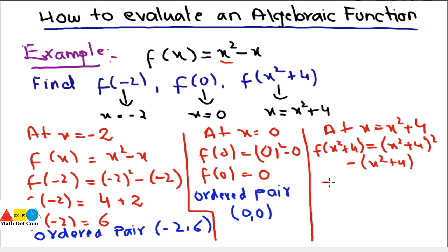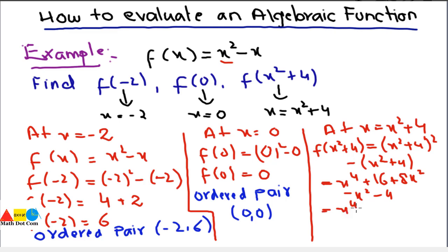Expanding (x² + 4)² using the formula (a + b)² gives x⁴ + 8x² + 16, then subtracting (x² + 4) gives x⁴ + 8x² + 16 - x² - 4. Simplifying: 8x² - x² = 7x², and 16 - 4 = 12. So f(x² + 4) = x⁴ + 7x² + 12. We don't write an ordered pair here because x remains unknown.